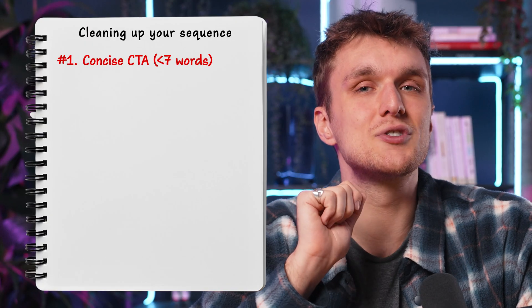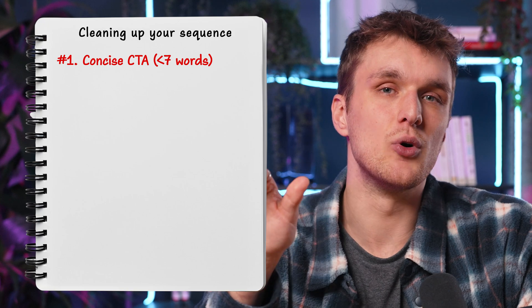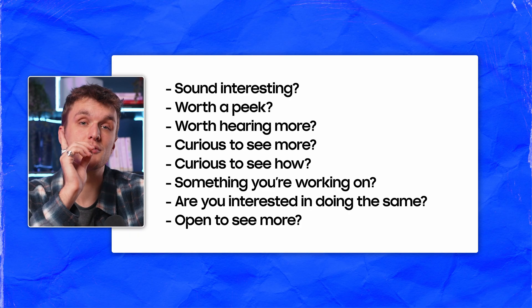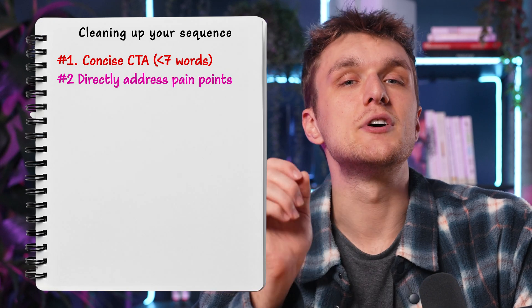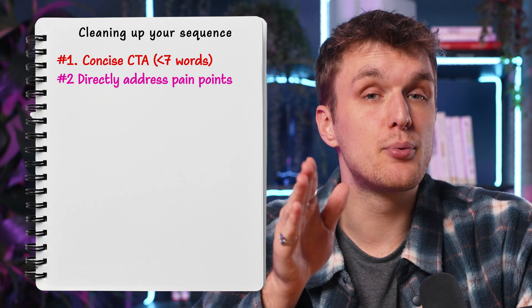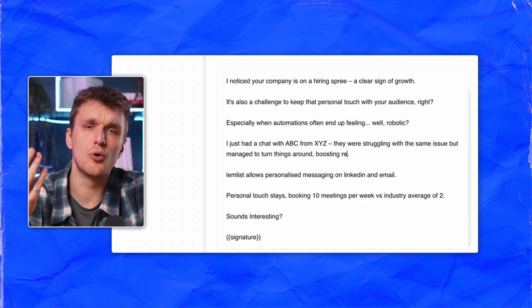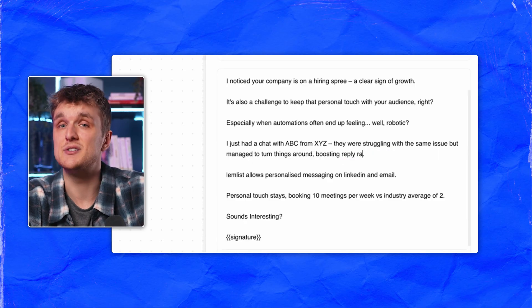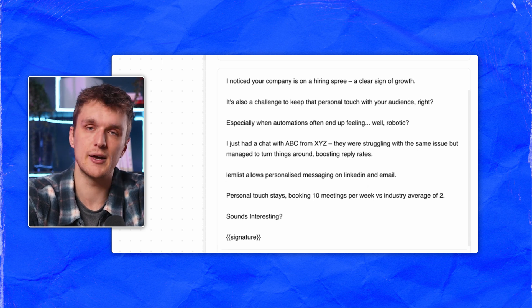Rule number one: ensure your CTA is concise — less than seven words. Interest-based CTAs work best, like these ones just here. Rule number two: directly address your prospect's pain points. Talk to BDR managers about low reply rates and meetings booked, not how much revenue they'll make. They don't care about that.